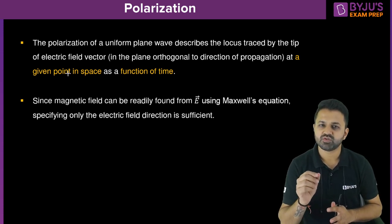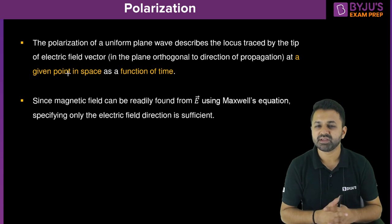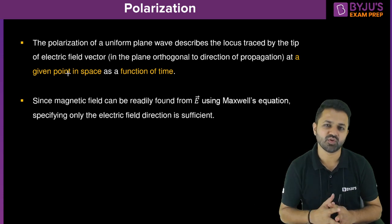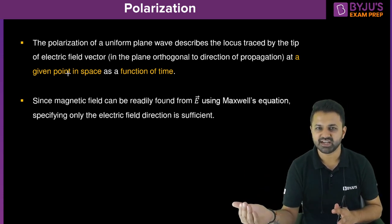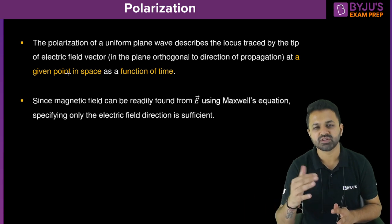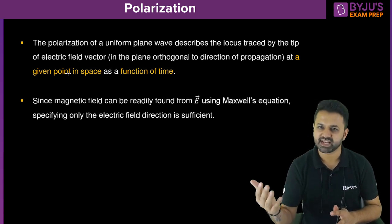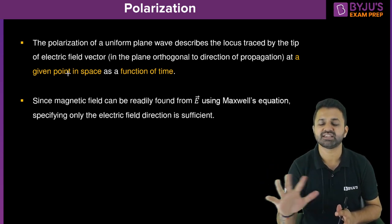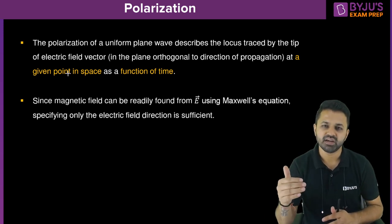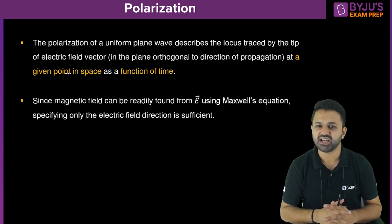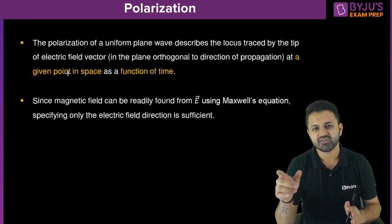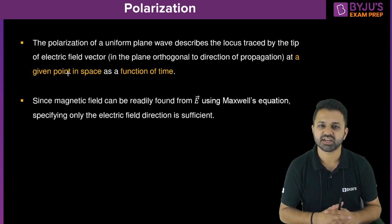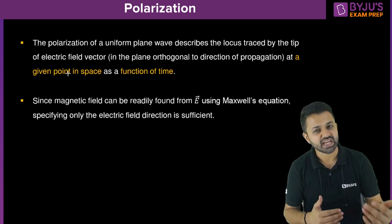After that, we have to draw the tip of the electric field. Whatever the electric field equation given to us, put the given point in space — that means z equal to zero. Suppose the wave is traveling in the z direction, then put z equal to zero. If it is in x direction, then x equal to zero; if y direction, then y equal to zero. That will give you one equation as a function of time. Change the time and draw the value of electric field in the given plane, and when you trace the tip of the electric field, you will get the direction of polarization.